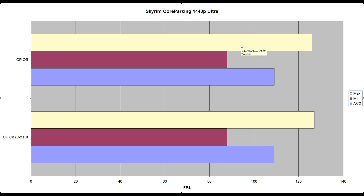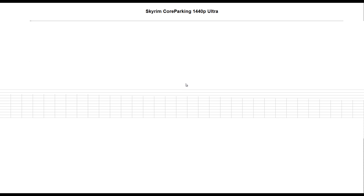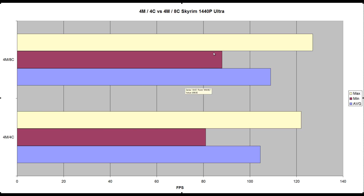Let's move on now to core parking with Skyrim. This is a CPU intensive game, so I really wanted to test this as well. Between Battlefield 4 and Skyrim we get the best of both worlds — one that uses 8 threads, one that is CPU intensive. We had 109.04 frames with core parking off versus 108.92 with it on. So there's just absolutely no difference between the two. Honestly, just leave core parking on the default — it makes no difference at all.